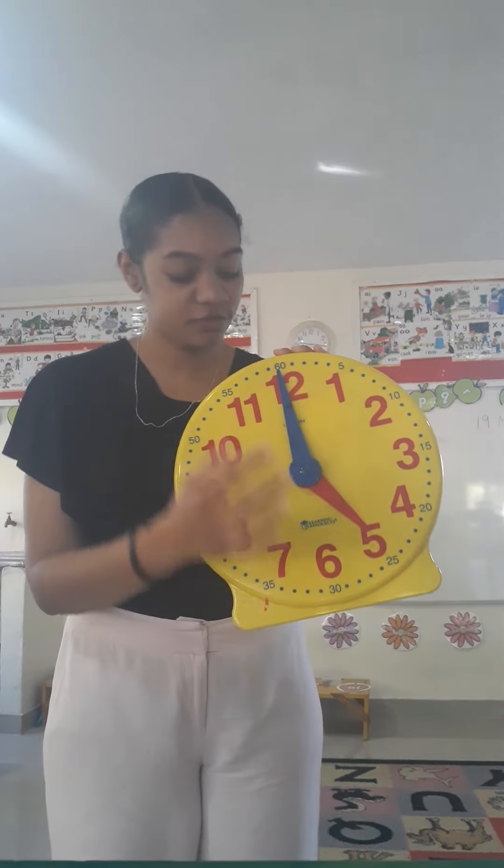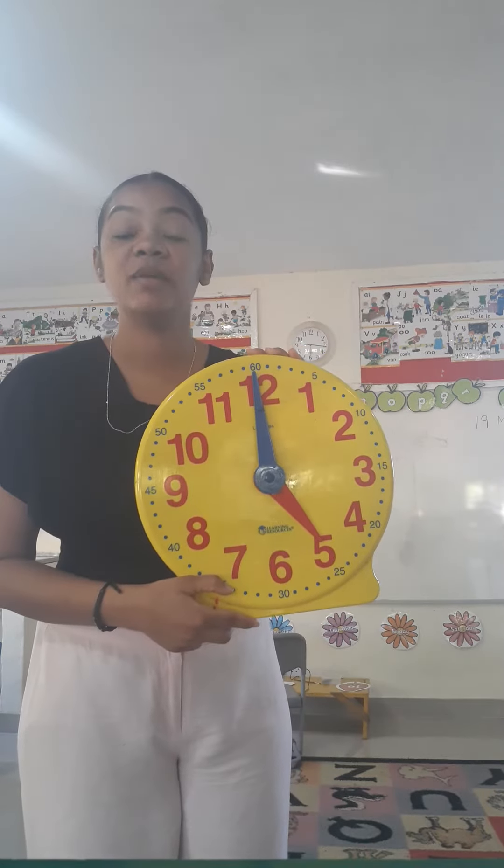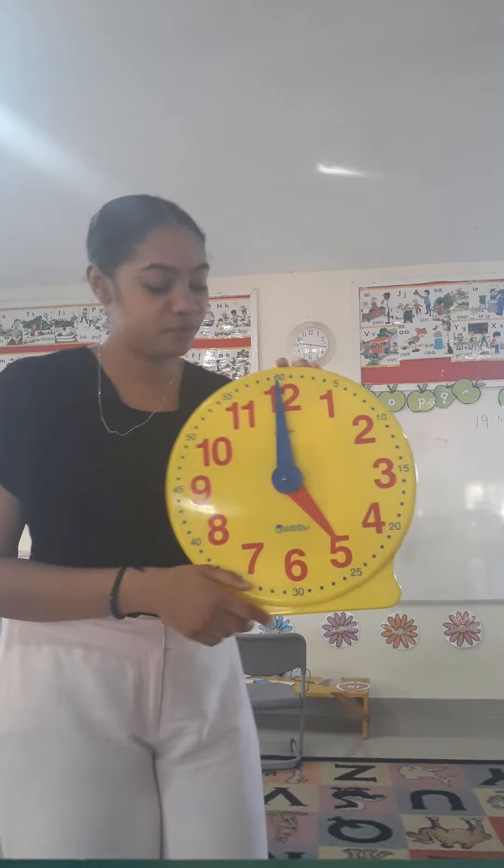Let's try another one. If the big one is on 12 and the small one is on five, that means it's five o'clock.